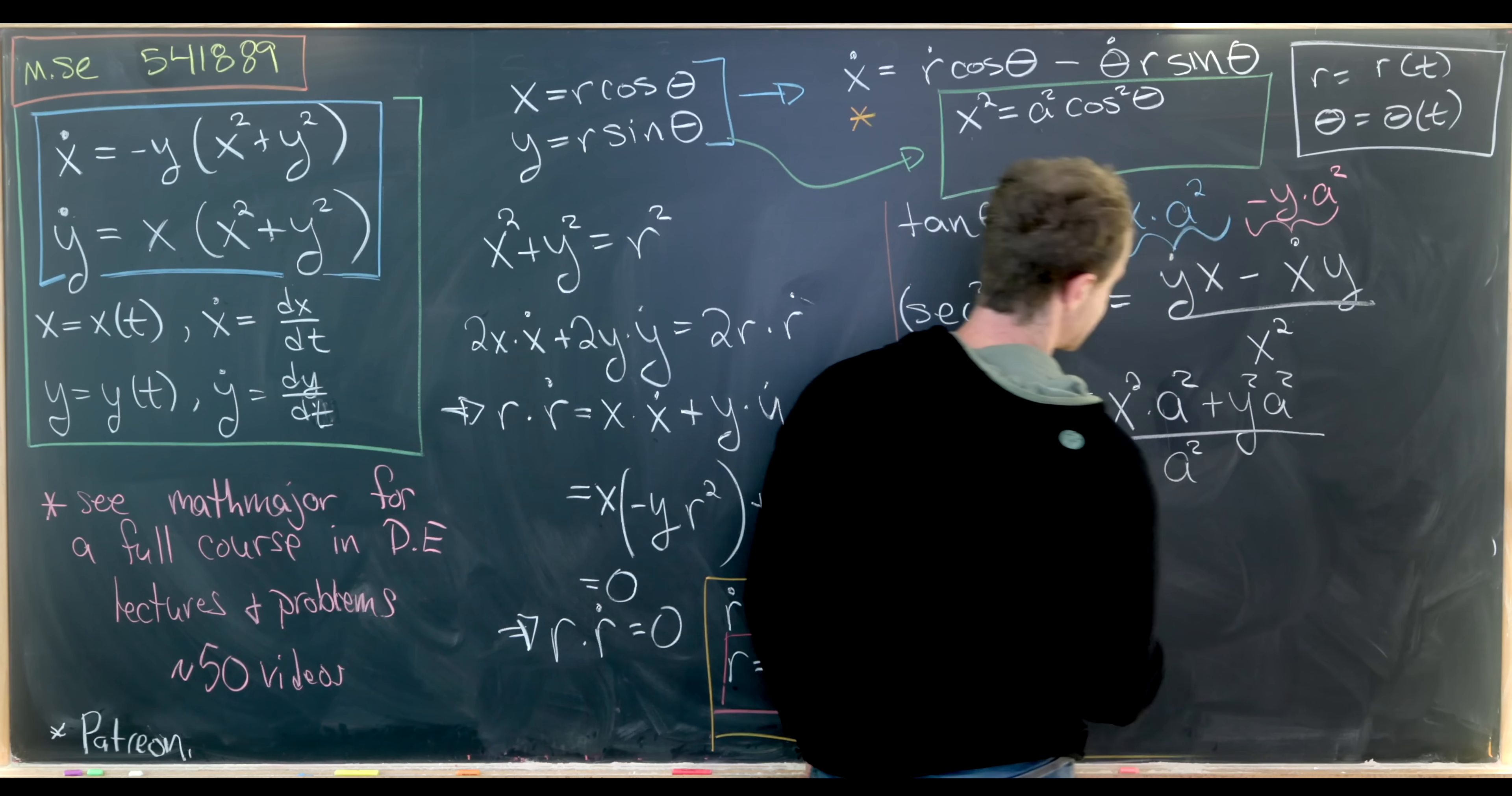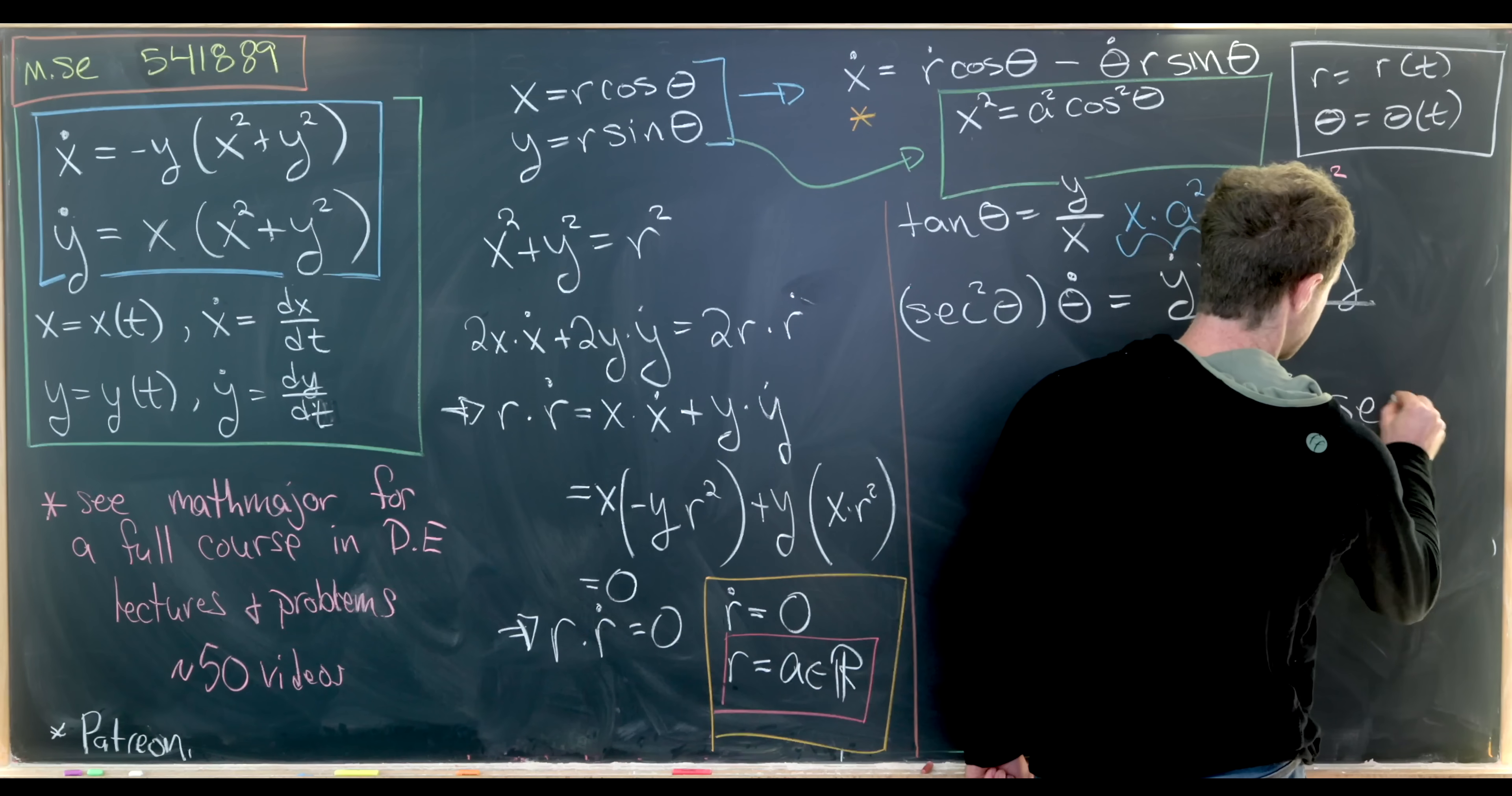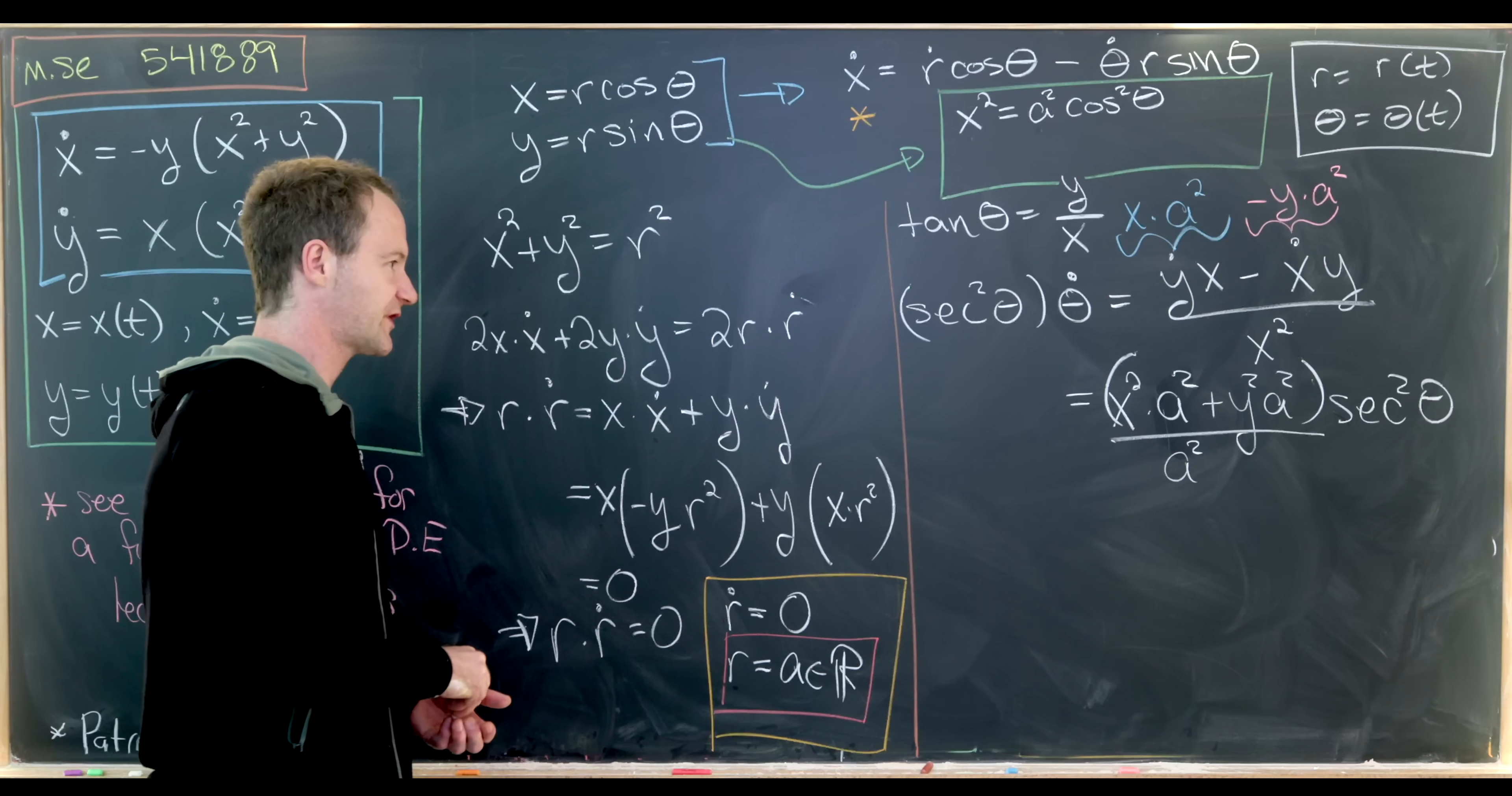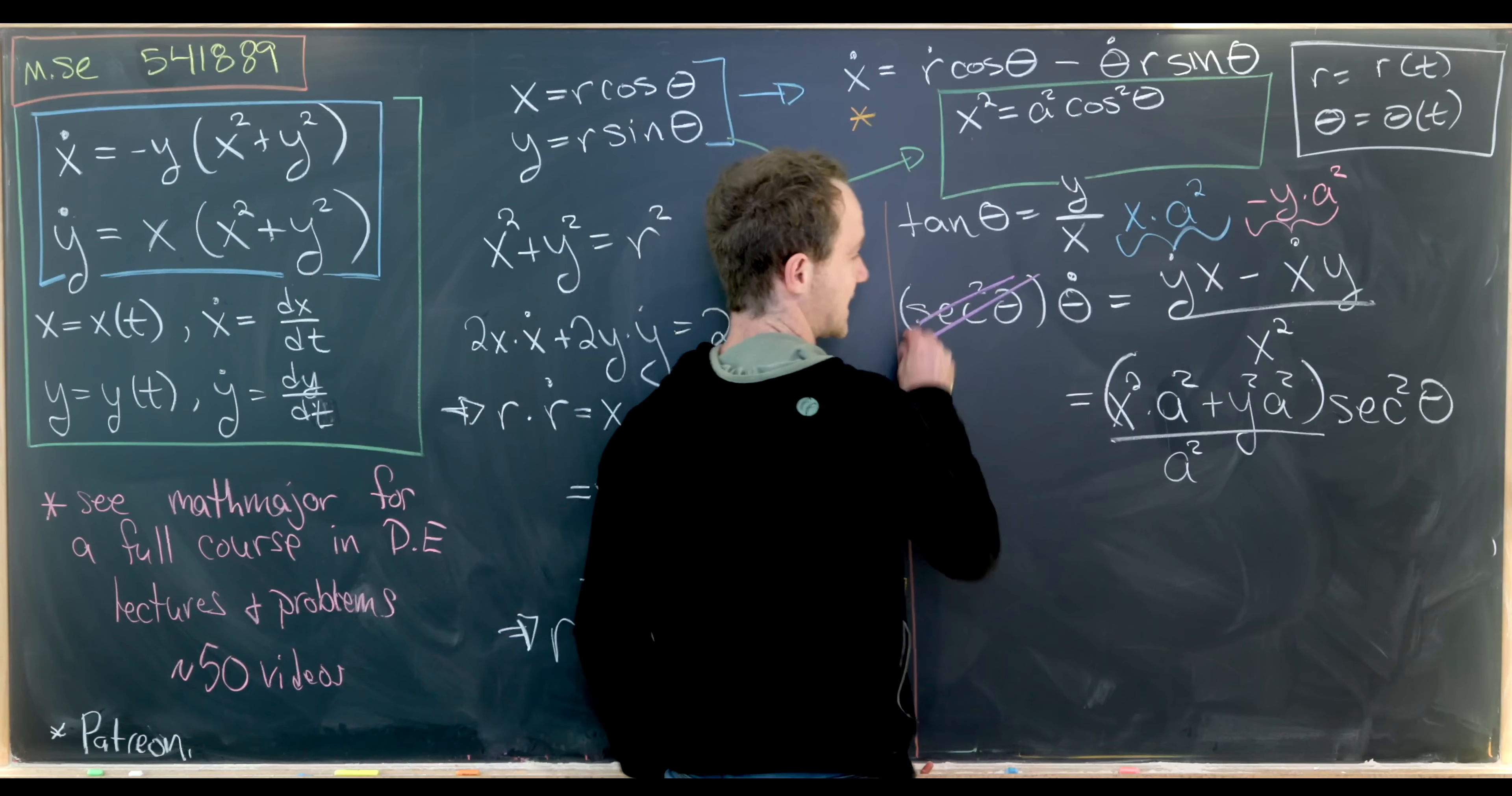So that means we can replace x squared with a squared cosine squared θ. So let's do that: a squared cosine squared θ. But that cosine squared is in the denominator, so we can bring it to the numerator and call it secant squared θ. So we're left with something like that.